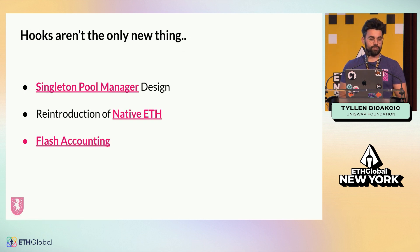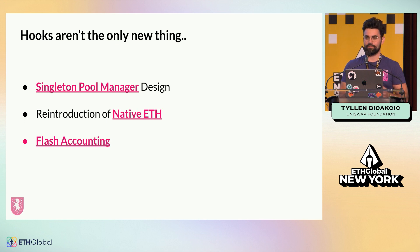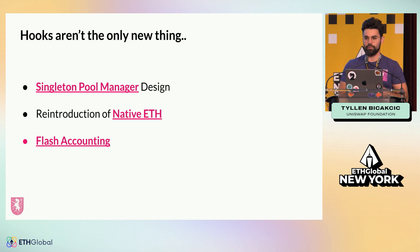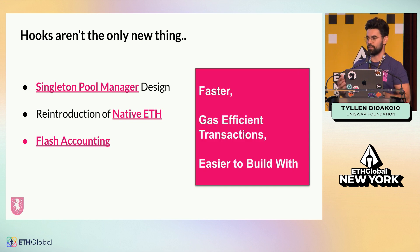Hooks aren't the only new thing here. We've added so many new things to Uniswap v4 that you probably won't recognize — it's not the same things we saw in v3. We've moved to a singleton pool manager design, we've reintroduced native ETH, and we have flash accounting. All of this is meant to make Uniswap faster, more gas efficient, and easier and more fun to build with for developers.